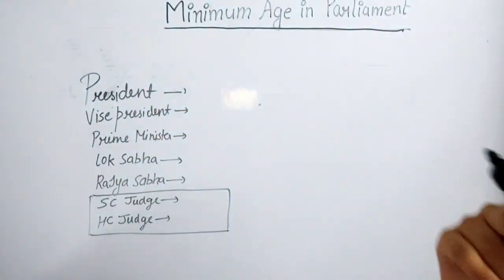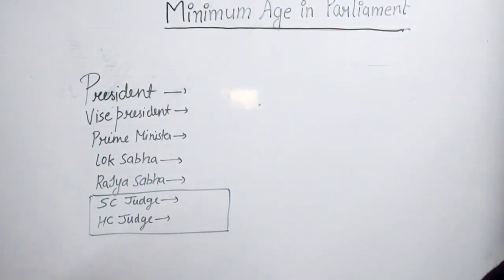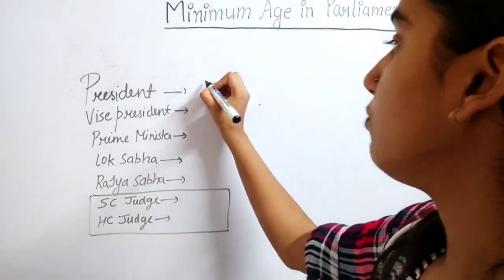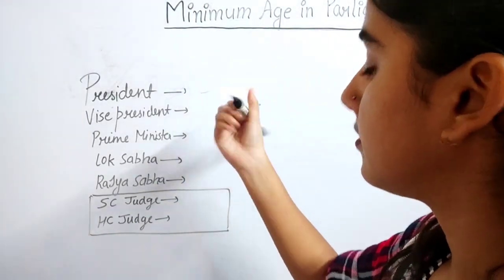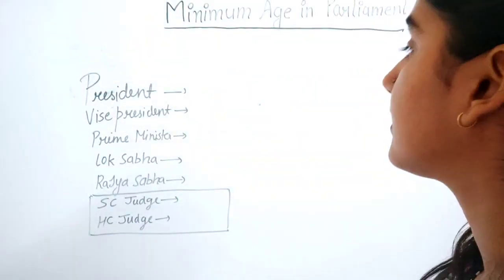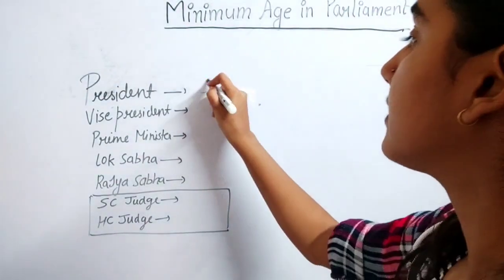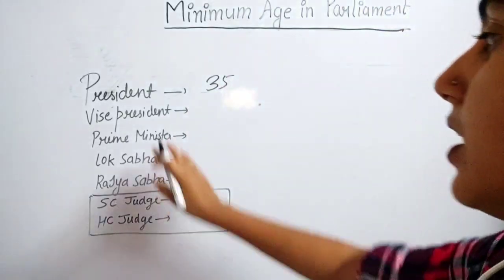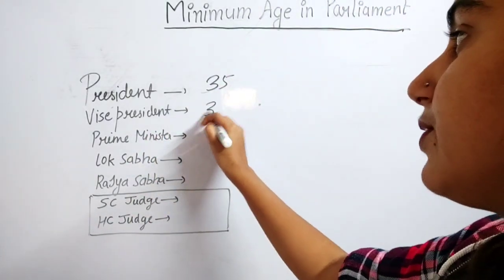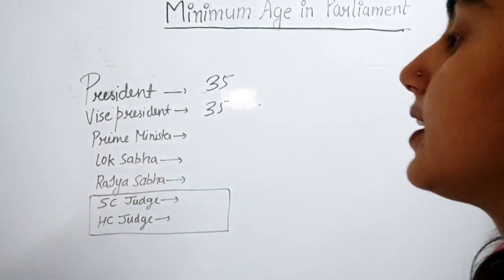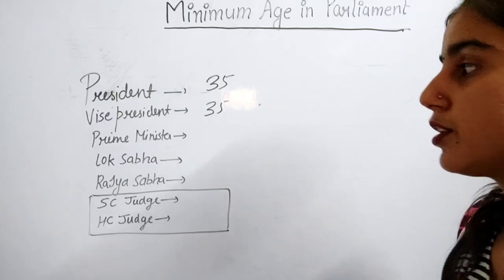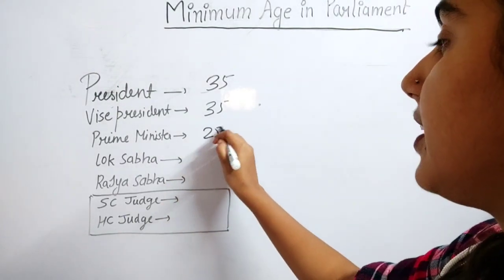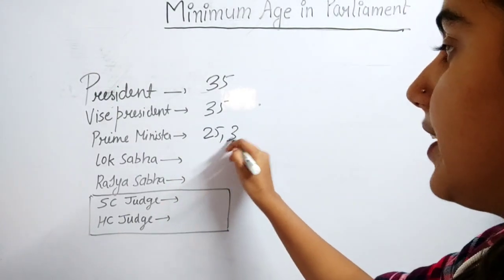For the President, the minimum age is 35. The Vice President is also 35.